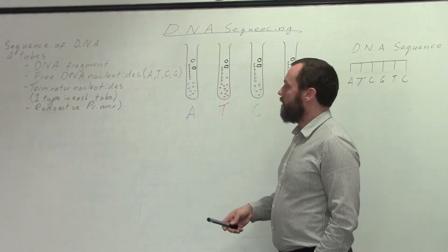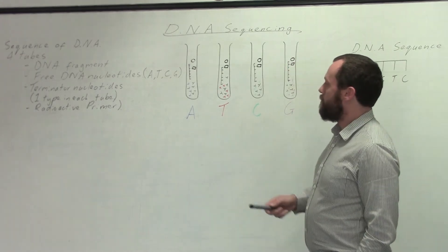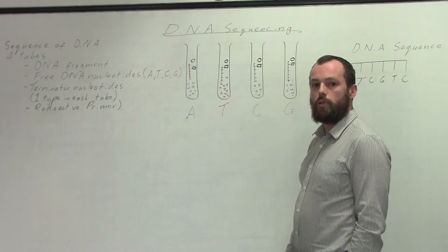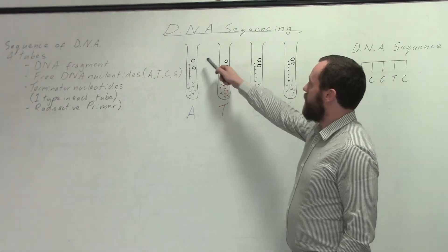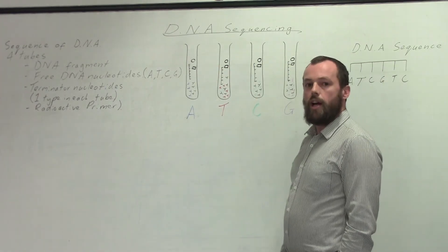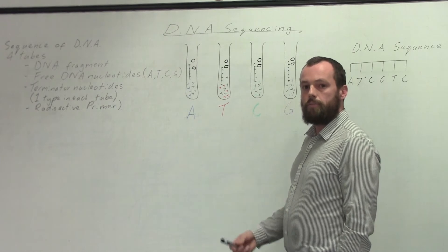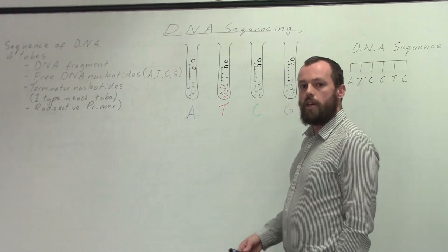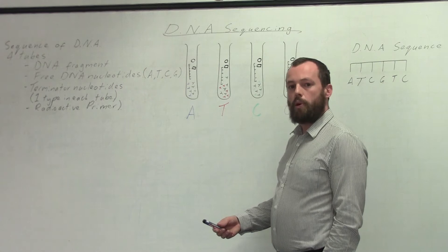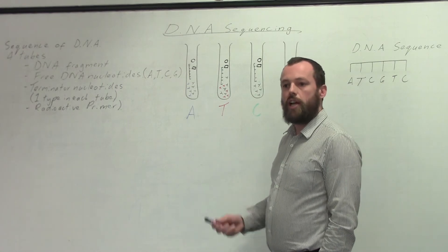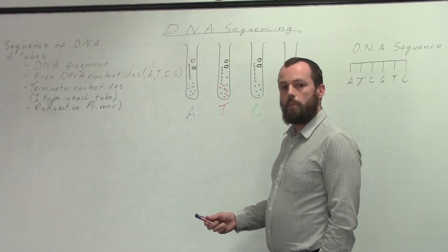We will then need a primer, which is radioactively labelled — represented by the black circle. And as well as that, the DNA polymerase. The primer helps the DNA polymerase to do its job, which is essentially adding on the free-floating complementary nucleotides.